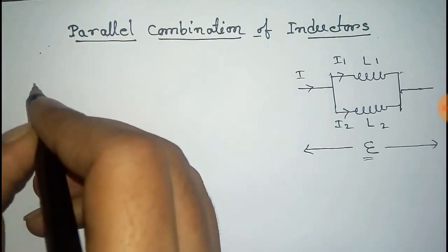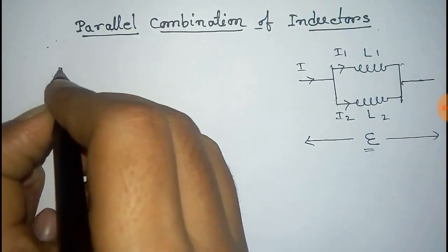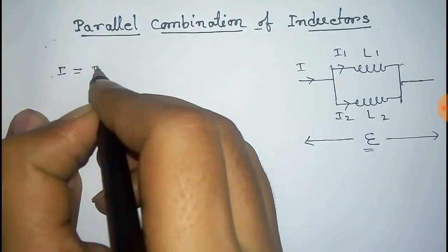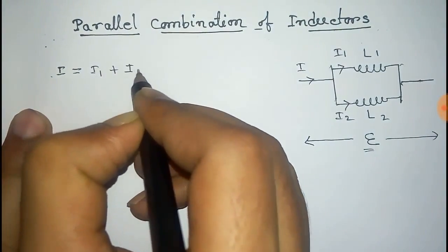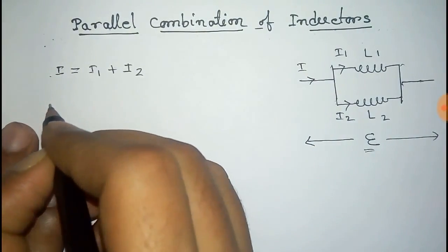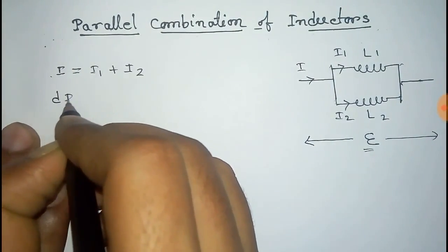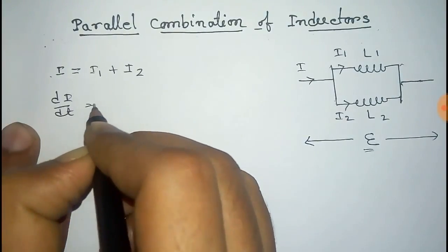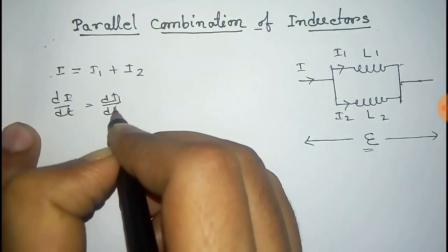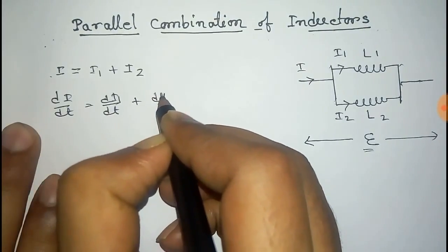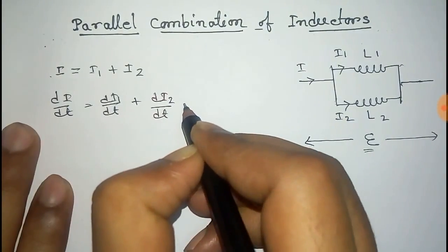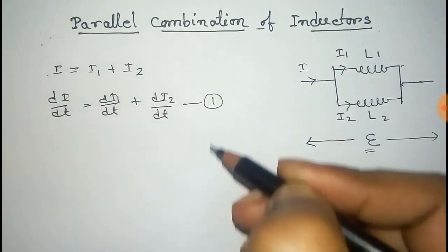The total current i is equal to i1 plus i2. Now differentiating with respect to time, we get di/dt = di1/dt + di2/dt. Take this as equation number one.